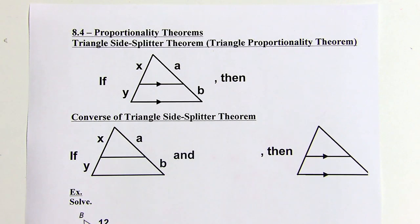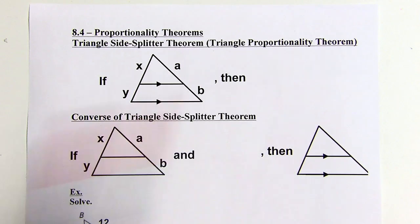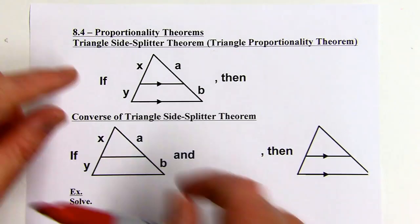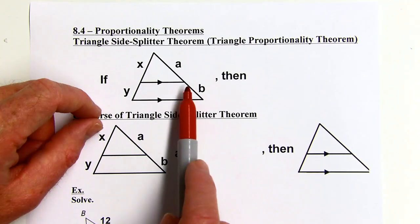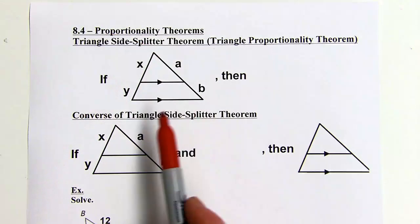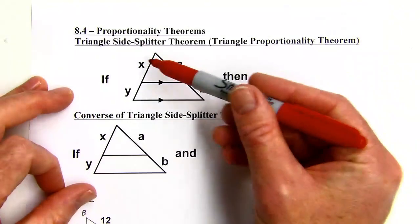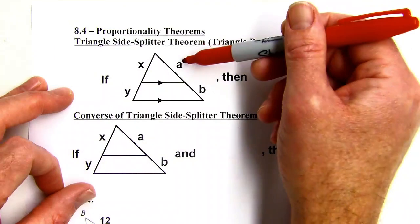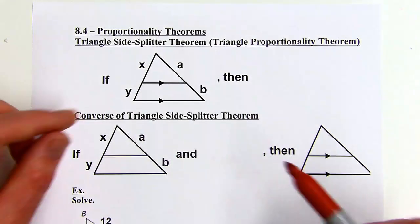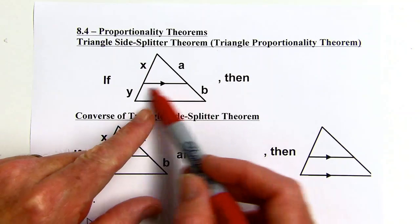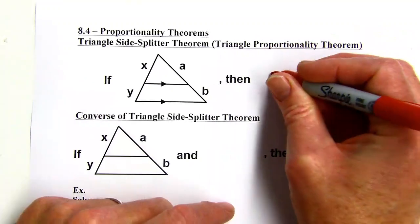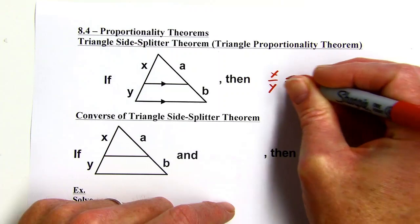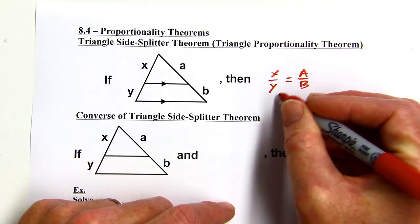Section 8.4 covers proportionality theorems. The first is the triangle side splitter theorem — also called the triangle proportionality theorem. When a line is embedded inside a triangle parallel to one of the sides, it splits the two other sides into segments x and y on one side, and a and b on the other. These segments are proportional: x over y equals a over b.